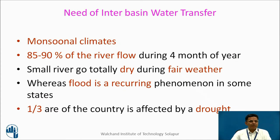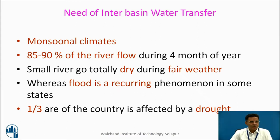India has a monsoon type of climate. It means we receive rainfall for 4 months, and the remaining months we receive very small rainfall. Hence, 85 to 90% of river flow is during 4 months of the year. Small rivers go dry during fair weather, whereas flood is a recurring phenomenon in some states. One third of the country is affected by drought almost every year.